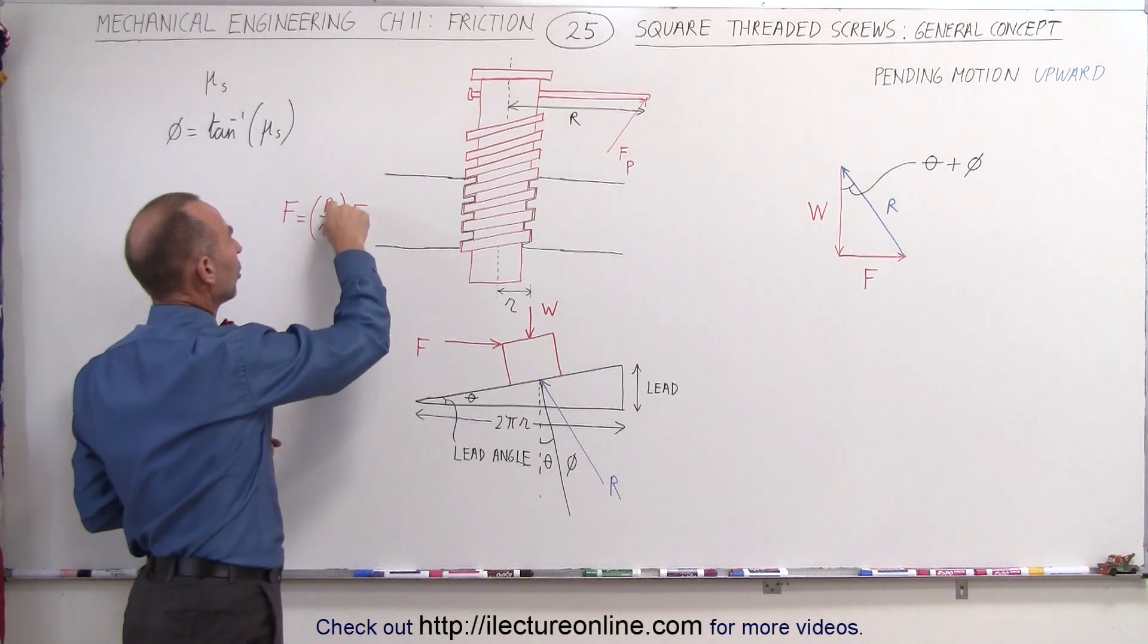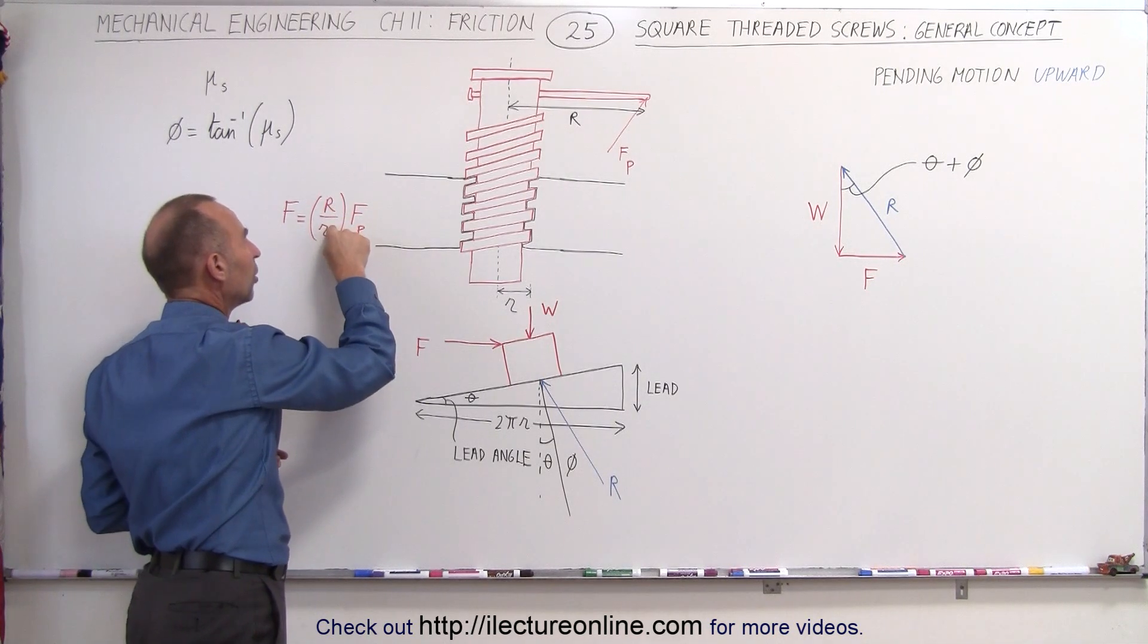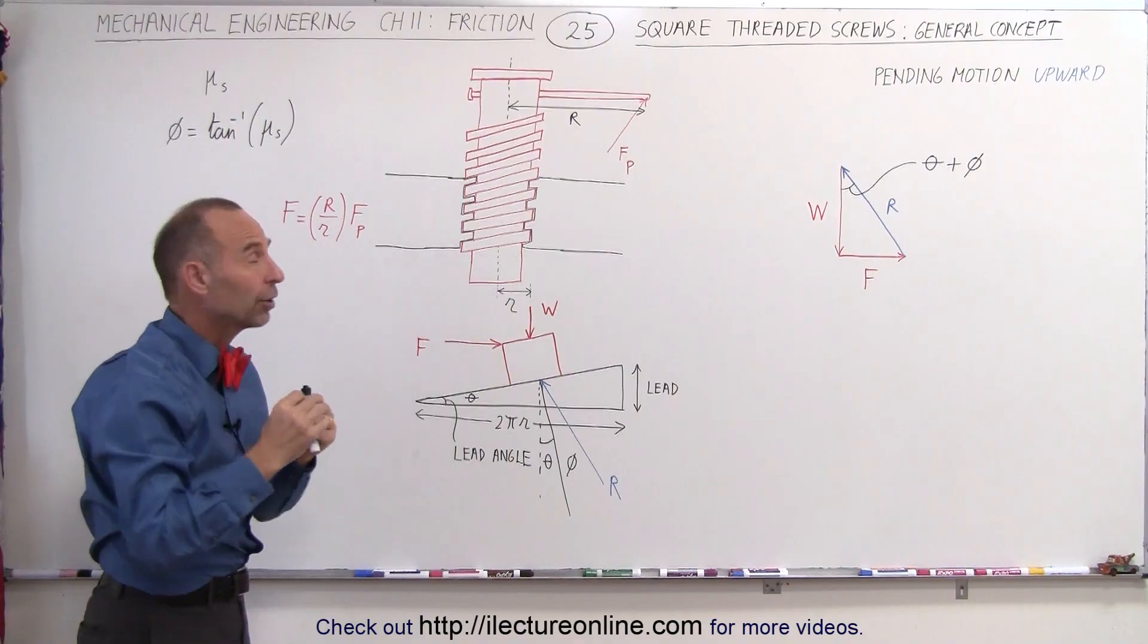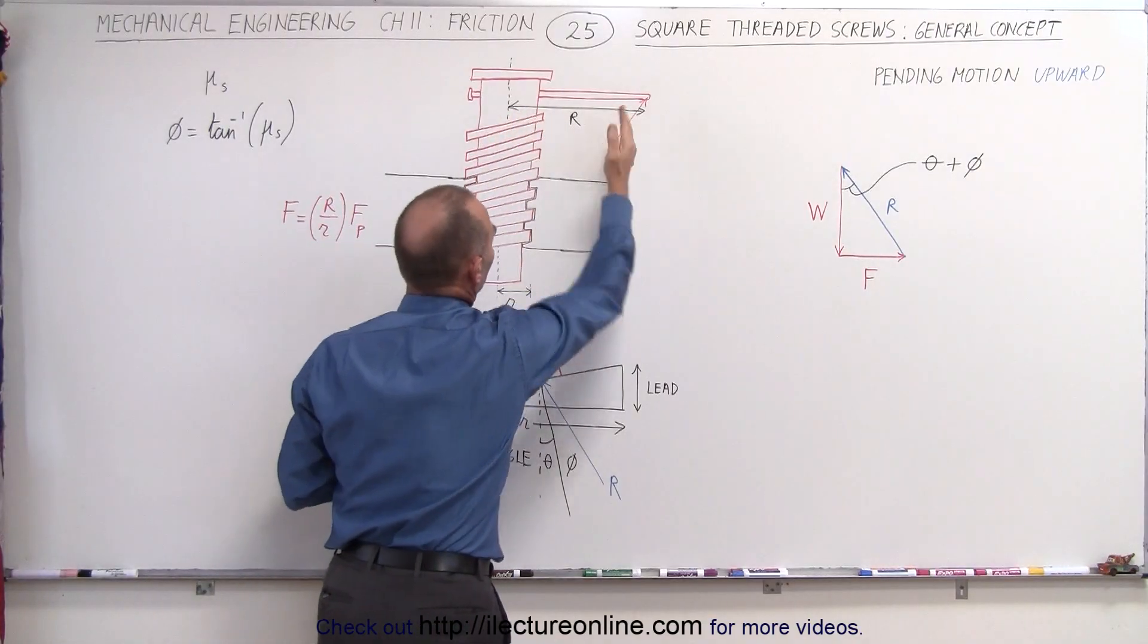So you can see that large r is much larger than the small r, so the force applied to the screw is very large due to the moment arm right here.